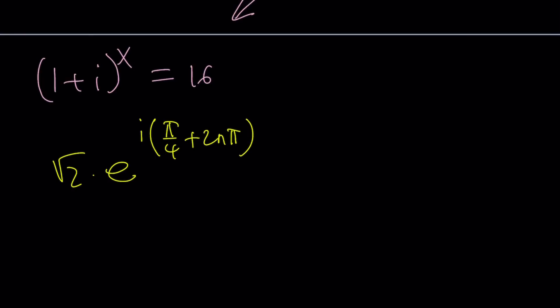You get something exponential. Let's raise it to the power of x and set it equal to 16. And 16, we're also going to write as a complex number. Let's write it as 16 times 1, but 1 is just 1 + 0i.